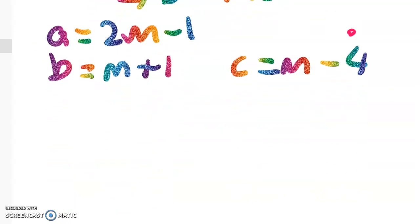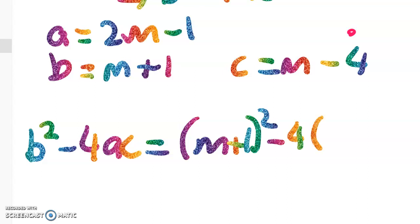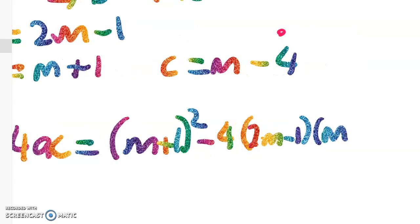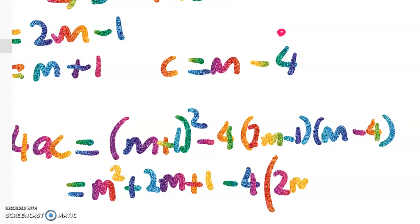Let's now work through b squared minus 4ac. We get m plus 1 squared, minus 4 times 2m minus 1, times m minus 4. Expanding that out, we get m squared plus 2m plus 1, minus 4 times 2m squared minus 9m plus 4.